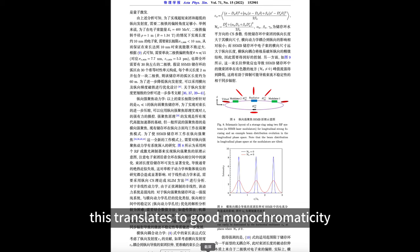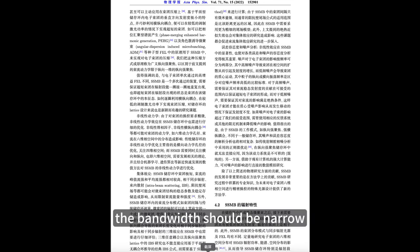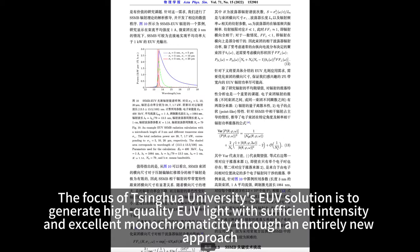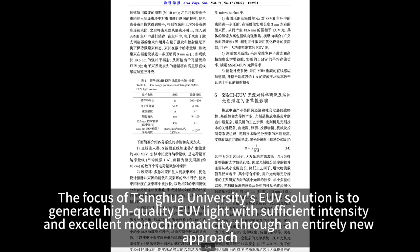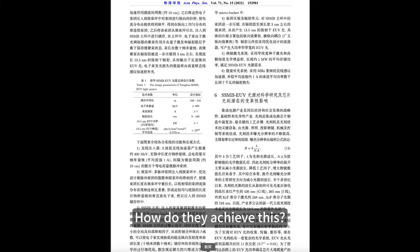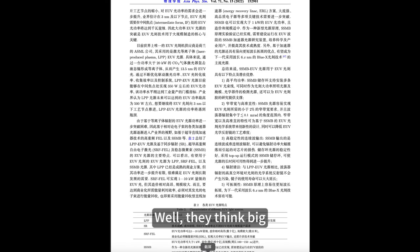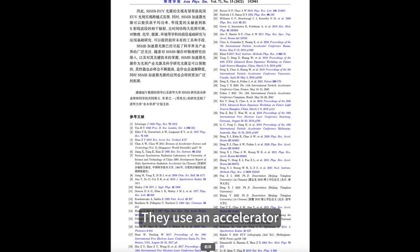In terms of EUV light quality, this translates to good monochromaticity—the wavelength should not be too spread out, the bandwidth should be narrow. The focus of Tsinghua University's EUV solution is to generate high-quality EUV light with sufficient intensity and excellent monochromaticity through an entirely new approach. How do they achieve this? Well, they think big—they use an accelerator.